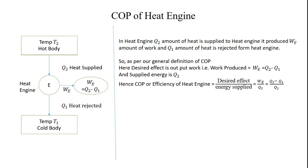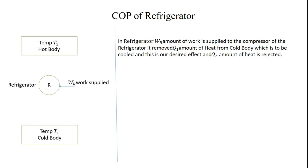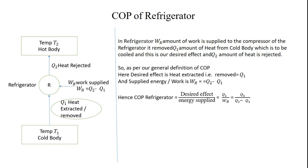Now let's see the COP of a refrigerator. In the refrigerator, WR amount of work is supplied. It removes Q1 amount of heat from the body to be cooled — this is our desired effect — and Q2 amount of heat is rejected, so WR = Q2 − Q1. As per the general definition of COP, the desired effect is heat removed Q1, and the supplied work is WR = Q2 − Q1. Hence, COP of refrigerator = Q1 / WR = Q1 / (Q2 − Q1).